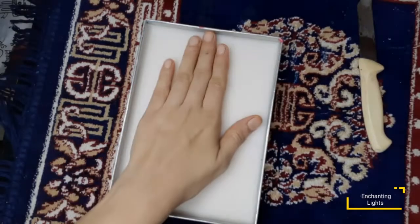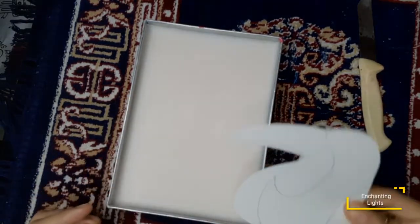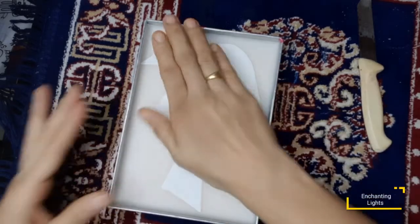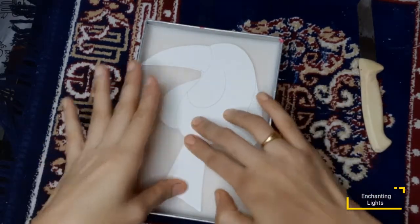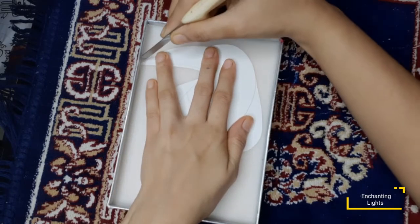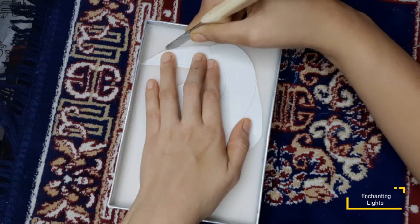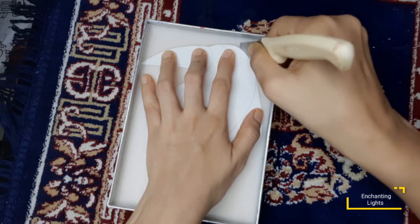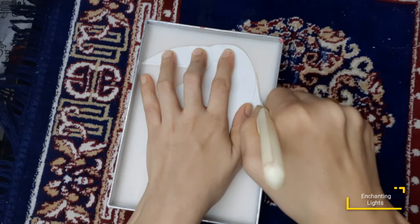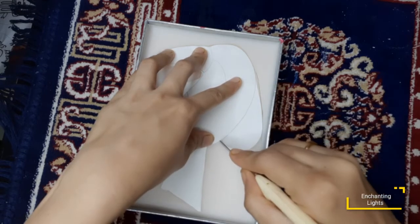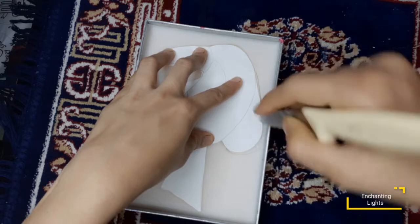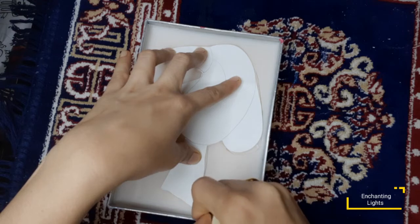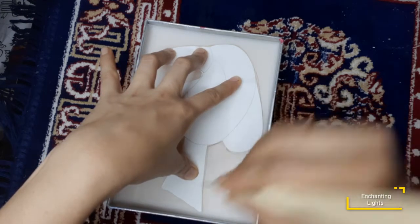Now my wax has completely set. It's soft from inside and hard from outside. Let's keep our toucan stencil on it and I'll press it properly so that it doesn't move. And with the help of a knife I'll start cutting. Once you draw the sketch and place it on the wax, it's easier to cut the desired shape.